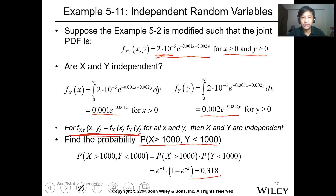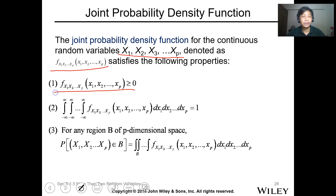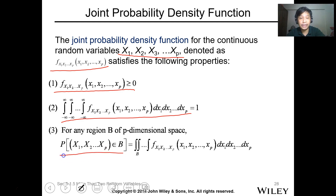For the joint probability of multiple variables, instead of just two, we now have p variables for the joint probability. The function f(x) must be greater than or equal to zero, and the multiple integration over all variables must equal 1. The probability of a specific region is the multiple integral of the joint expression over that region.